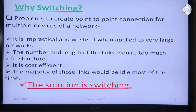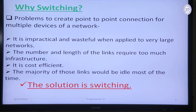But in a large network, it is not possible to create a point-to-point dedicated path between every pair of nodes. Because the number of links and the length of links is too much, it is not cost-efficient and the majority of links become idle most of the time. So it is very impractical and wasteful to create a point-to-point connection between each pair of devices for a large network. Instead, we can solve this problem by creating a switch network. The solution to this limitation is switching.